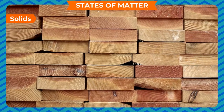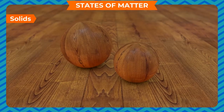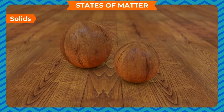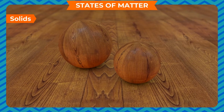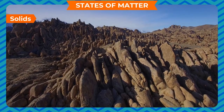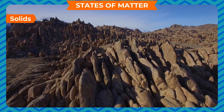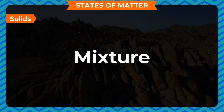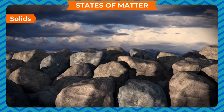Wood, iron, and brick are examples of solids. Solids are usually hard because their molecules are packed tightly together. Solids can be made up of pure elements or a variety of compounds. When you have more than one type of compound in a solid, it is called a mixture. Most rocks are a mixture of many different compounds.